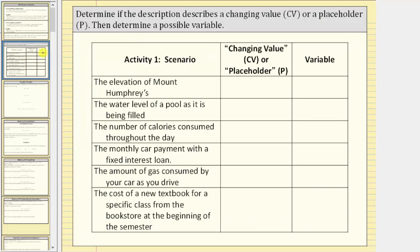Here we're asked to determine if the description describes a changing value or a placeholder, then determine a possible variable. We'll enter cv if the variable represents a changing value, and p if the variable is a placeholder, meaning a value that doesn't change.